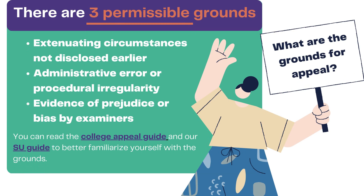The college will only accept an appeal if it meets certain criteria, known as grounds for appeal. Under the college regulations, there are three permissible grounds. The first is extenuating circumstances not disclosed earlier. Goldsmiths defines extenuating circumstances as short-term, unexpected and unpreventable events that affect your academic performance or ability to study. The categories of extenuating circumstances recognised by the college can be found on the categories of acceptable and unacceptable extenuating circumstances webpage. Other grounds include administrative error or procedural irregularity. Examples of administrative errors include miscalculations of degree classifications, wrong module marks recorded, or a penalty cap applied incorrectly.